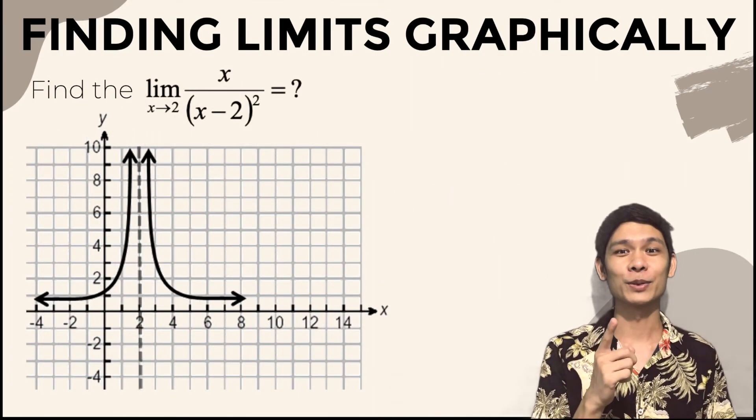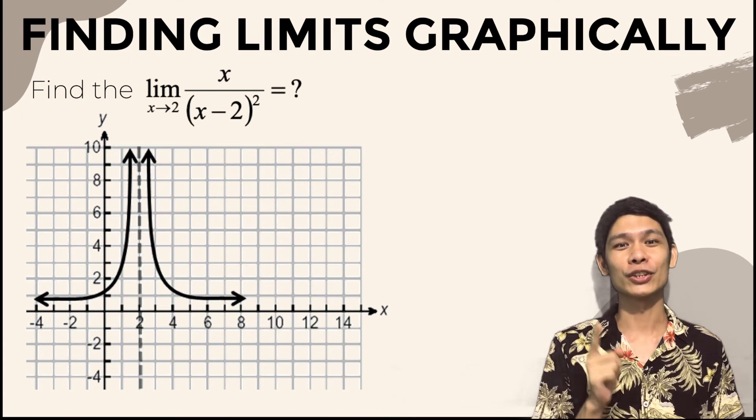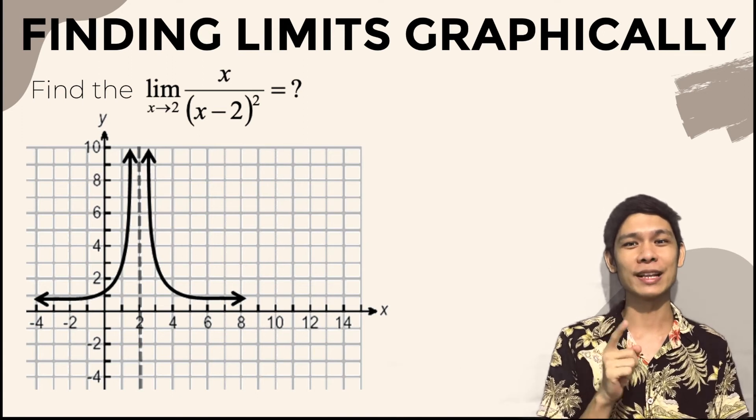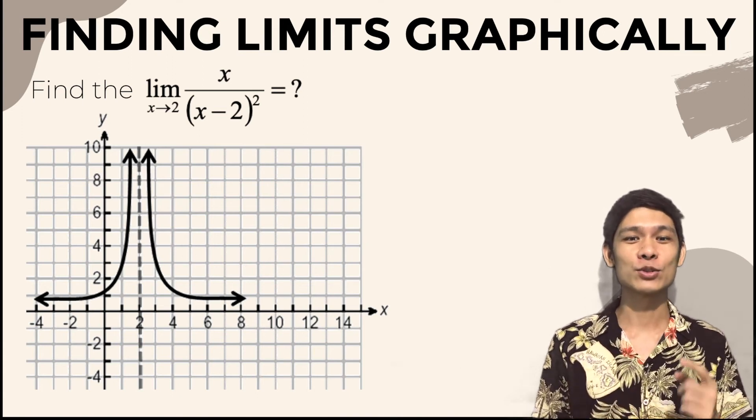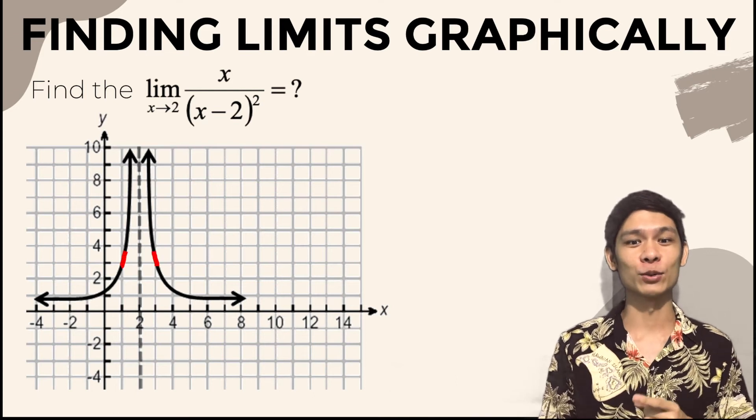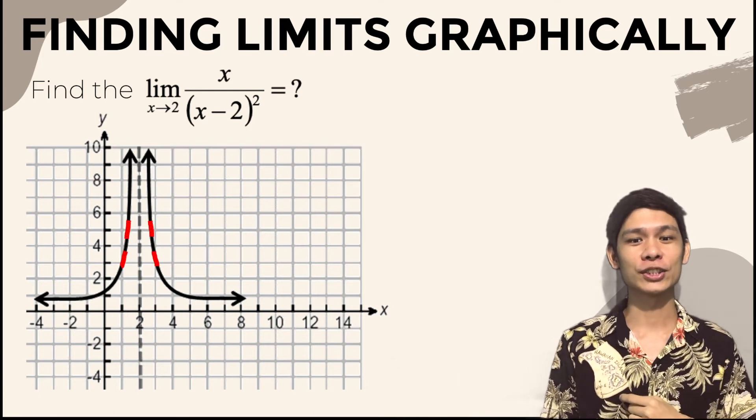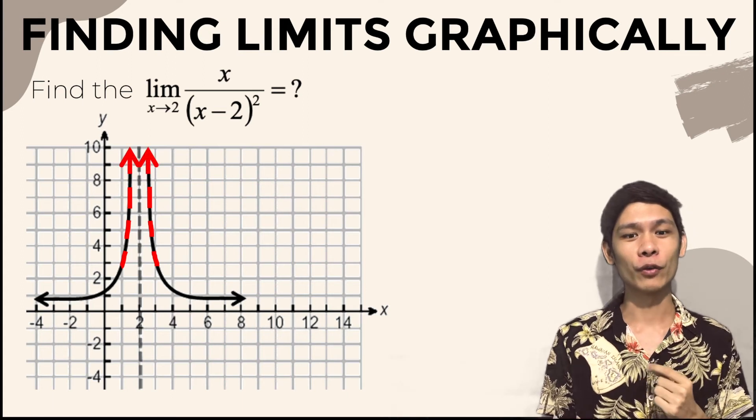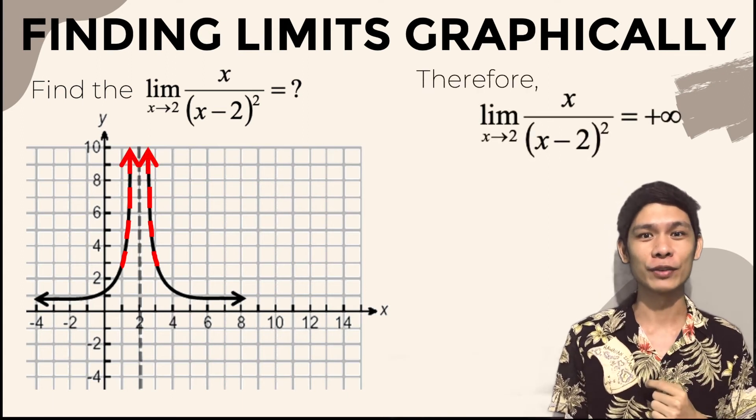For our last example, let's find the limit of the function x over x minus 2 squared as x approaches 2. As you trace along the graph towards x equal to 2 from both directions, the height increases without bound. Therefore, the limit is positive infinity.